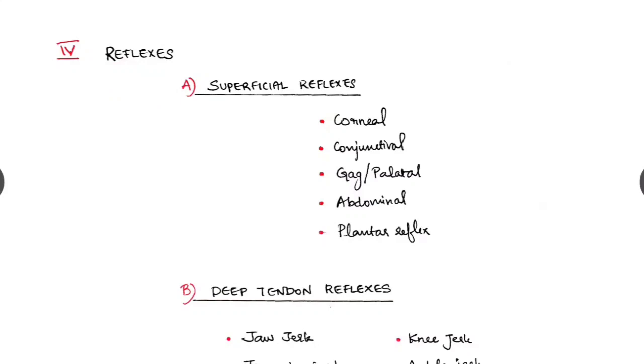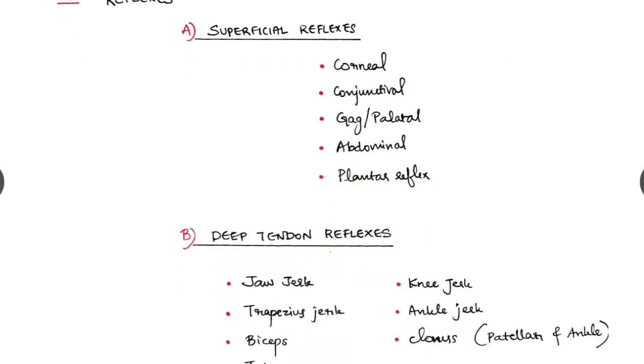Next is reflexes. Either we write it here under the motor system or we write it as a separate heading. Reflexes can be superficial reflexes and deep tendon reflexes. Superficial reflexes are corneal reflex, conjunctival reflex, gag or palatal reflex, abdominal reflexes and plantar reflex. Plantar reflex, we look for the Babinski sign.